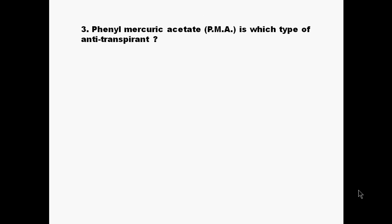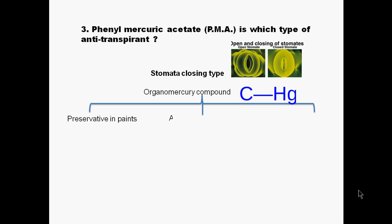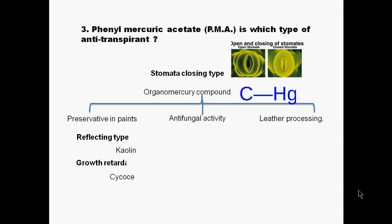The next question asks: phenyl mercuric acetate is which type of anti-transpirant? Phenyl mercuric acetate is a stomata-closing type of anti-transpirant. It is an organic compound previously used as a preservative and for antifungal activity in leather processing. It was found to have the capacity to close stomata, so it has been used as an anti-transpirant. There are also deflecting-type anti-transpirants like kaolin, and growth-retardant type like cycocel.